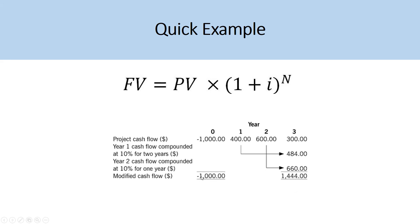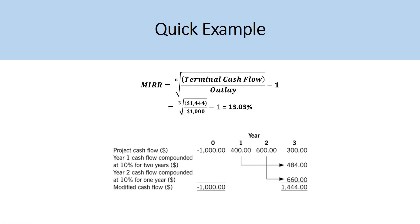The cash outlay is $1,000. We input that into our formula: take $1,444, divide it by $1,000, take the root to the power of three because that's the three-year investment horizon, and subtract one to get a modified internal rate of return of 13.03%. This will be significantly lower than the IRR calculation, which would be significantly higher.